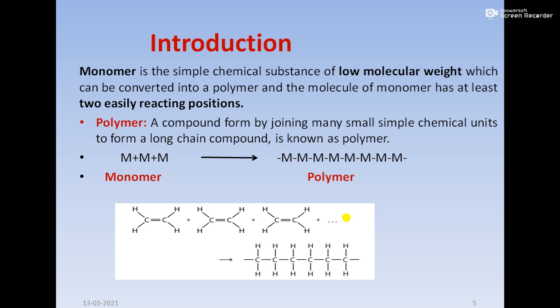Introduction to the polymer. As you studied in your previous class — what is monomer, what is polymer, what is polymerization — that is the introductory part. A monomer is the simple chemical substance of low molecular weight which can be converted into polymer, and the molecule of monomer has at least two easily reactive positions. Simply remember: monomer combines to form polymer. Monomer is a low molecular weight compound and it will form a high molecular weight compound.